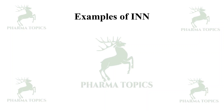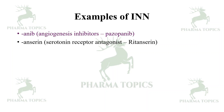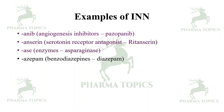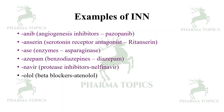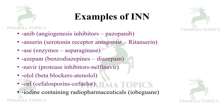Let us see some examples of INN stems. The stem '-anib' denotes angiogenesis inhibitors, for example, bosutinib. The stem '-setron' denotes serotonin receptor antagonists. The stem '-azepam' is the INN for diazepam-like drugs such as benzodiazepines. The stem '-navir' indicates protease inhibitors, for example, nelfinavir. The stem '-ol' is used for beta blockers, '-cef' for cephalosporins, and iodine-containing radiopharmaceuticals include the stem 'io-'.